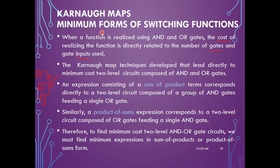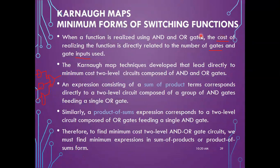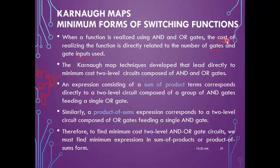Under the K-maps topic, we have minimum forms of switching functions. When a function is realized using AND and OR gates, the cost of realizing the function is directly related to the number of gates and gate inputs used. So if the number of gates or gate inputs is high, the cost of implementing that function is also high.